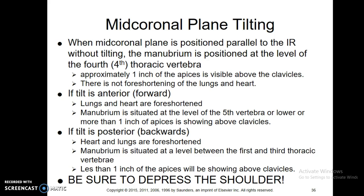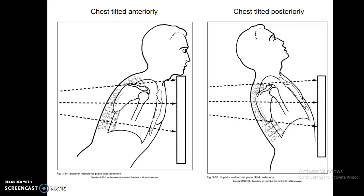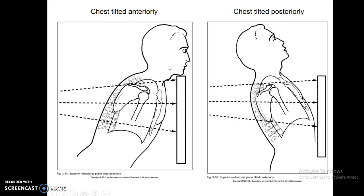Tilting — we talked about tilting a little bit; make sure you go over this and read it. Basically there's a diagram with a posterior tilt and then going in the opposite direction, anterior tilt. Usually if patients are a little bit more kyphotic we'll get this anterior tilt, and that's going to foreshorten the lungs a little bit, so you want to make sure they're as straight up and down as possible.